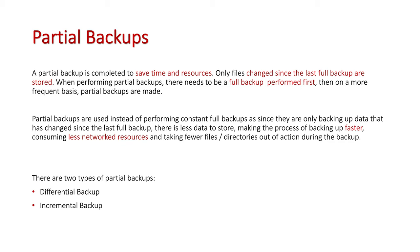Partial backups are used instead of constant full backups since they only back up data that has changed since the last full backup, meaning there is less data to store. This makes the backup process faster and consumes fewer network resources, as it only backs up the directories that have been updated since the previous backup. There are two types of partial backups: differential and incremental.